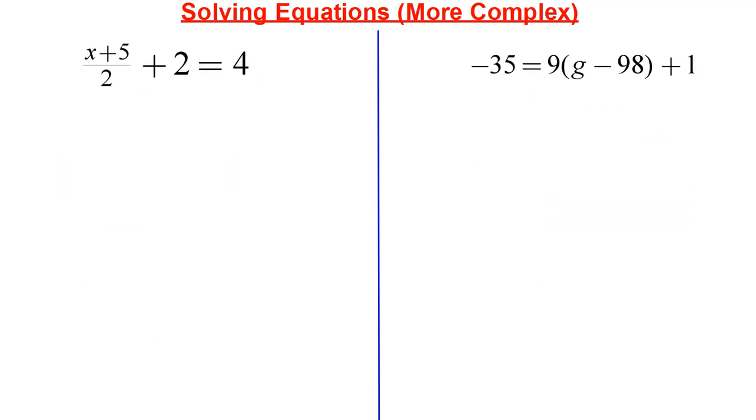Now let's try two harder ones. Now this is the same as the first one. The only thing that's different here is that I added this here. Now because I did that, I could go ahead and take care of this first. So minus 2 minus 2. We got x plus 5 over 2. What was remaining is equal to 4 minus 2, which is equal to 2.